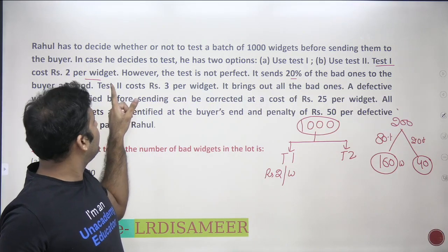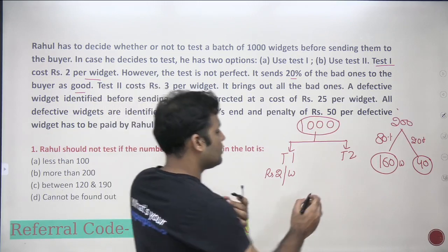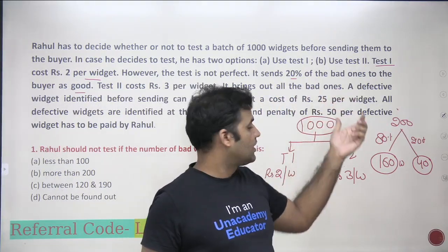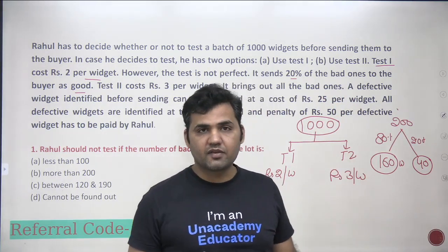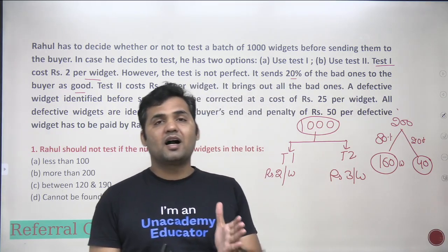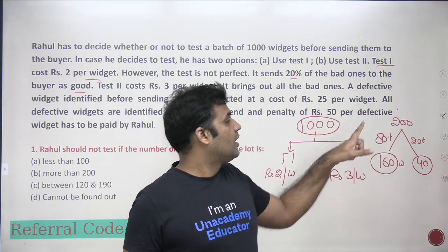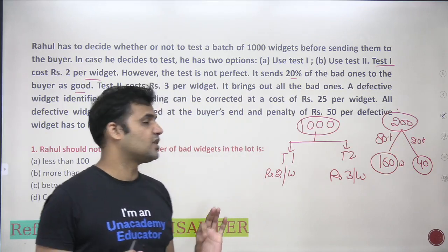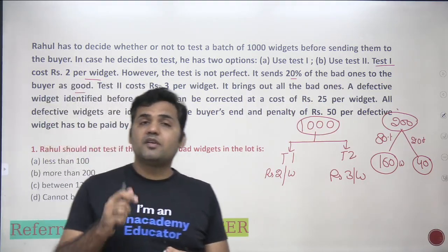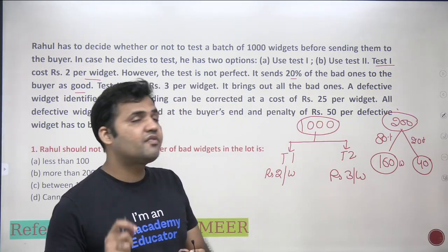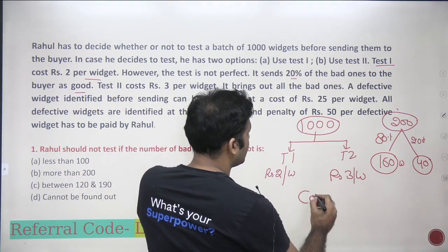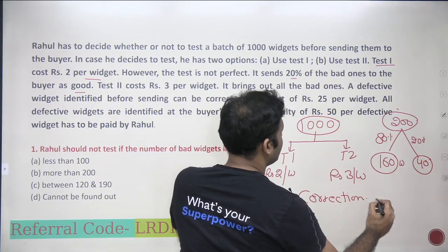If Rahul goes for Test 2, it costs 3 rupees per widget. Test 2 brings out all the bad ones — it's a perfect test with 100% detection of defective items. So if there are 200 defective products in the lot of 1000, Test 2 will identify all 200. A defective widget identified before sending can be corrected at a cost of 25 rupees per widget.